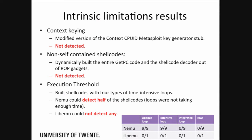We tried to implement all of these limitations as attacks. Some approaches were based on malware techniques that we adapted for shellcodes. For context keying, we modified a shellcode generated by Metasploit using CPUID as a kind of context-keying shellcode, and both emulators failed to detect our shellcode. The same was true for non-self-contained shellcodes. For execution threshold, NEMU failed but LEEMU could detect about half of them — likely because our loops were not long enough to fully evade the emulator.